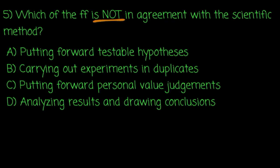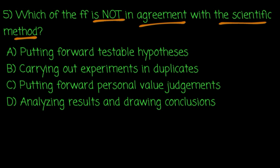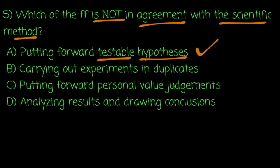Which one of the following is not in agreement with the scientific method? So, in the scientific method, one important part is putting forward a testable hypothesis. A hypothesis must be testable and falsifiable — it must be possible to disprove it through experiments.